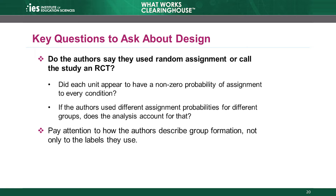Then, determine whether the authors used different assignment probabilities for different groups. If so, does the analysis account for that? Paying close attention to how the authors describe the group formation beyond the labels they use, as well as answering these key questions, will help determine whether the study is eligible to meet WWC group design standards without reservations.